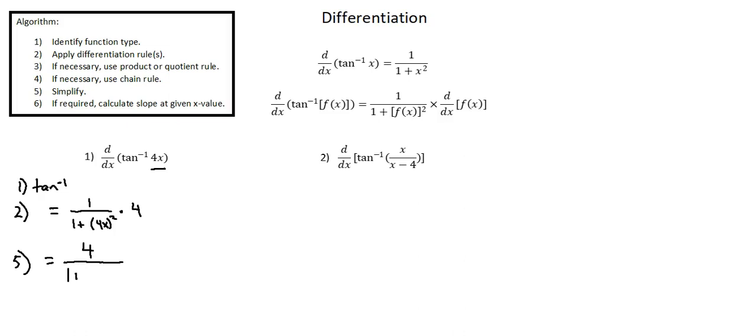In the denominator 1 plus 4 squared is 16 and x squared is x squared. Our simplified derivative is 4 over 1 plus 16x squared.